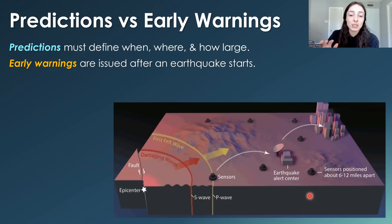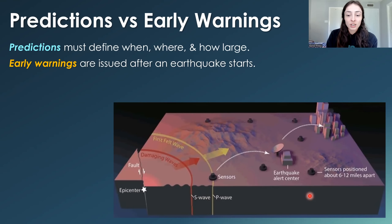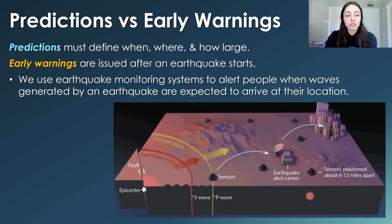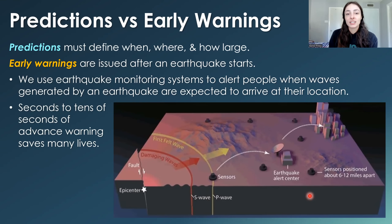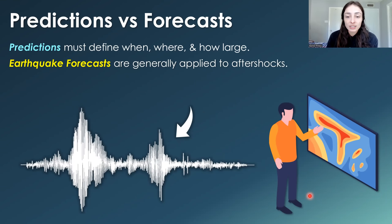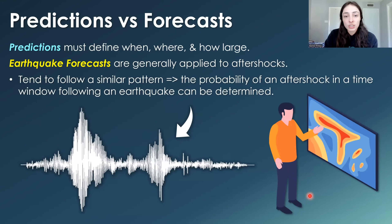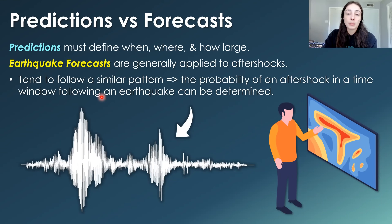Before getting into why we can't predict earthquakes, let me define the difference between predictions and early warnings, and other terms often confused with predictions. Early warnings are issued after an earthquake starts — we use earthquake monitoring systems to alert people when waves are generated and are expected to arrive at their location. Even seconds to tens of seconds of advance warning can save many lives, but it's not a prediction. Earthquake forecasts are generally applied to aftershocks: the probability of an aftershock in a time window following an earthquake can be determined, and that is what we call an earthquake forecast.